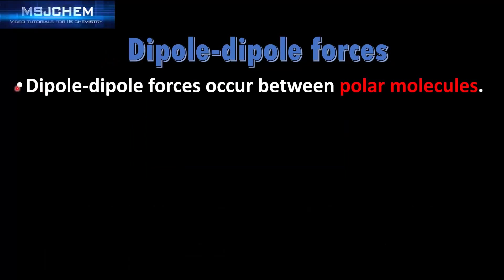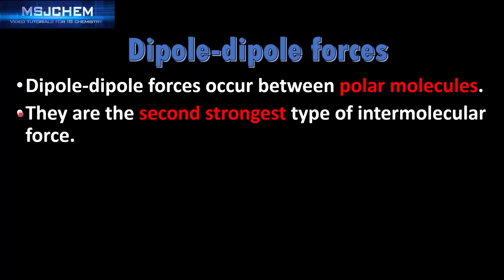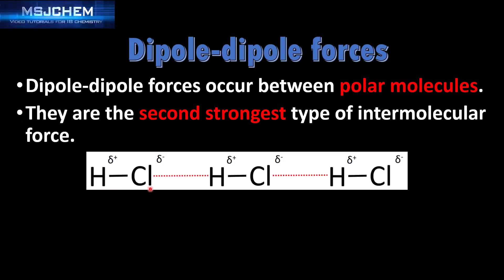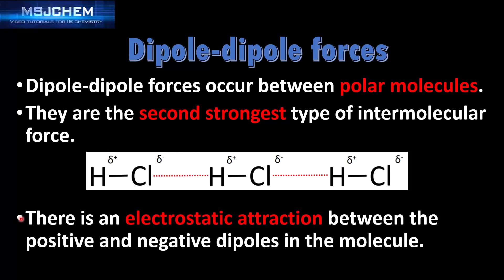Dipole-dipole forces occur between polar molecules. They are the second strongest type of intermolecular force. Here is an example of dipole-dipole forces between molecules of hydrogen chloride. Because of the difference in electronegativity between hydrogen and chlorine, the chlorine has a negative dipole and the hydrogen has a positive dipole. There is an electrostatic attraction between the positive and negative dipoles in the molecule, which are dipole-dipole forces.